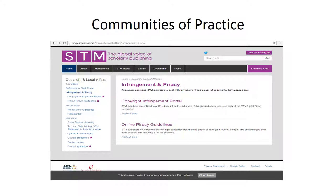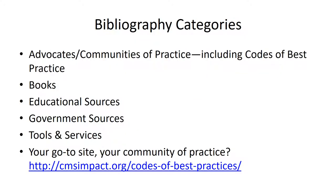One way to approach Fair Use is to find out if your field or profession has a code of best practices regarding copyright and Fair Use. The fields with the most well-developed codes include journalism, communication, film, media, literature such as poetry, academic libraries, documentary filmmakers, and visual artists. At the end of this presentation, I'll be providing a bibliography that includes citations to those codes of best practice along with other helpful sources.